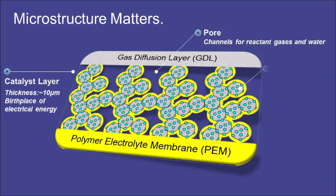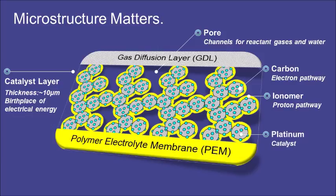In order to make fuel cells cheaper, more efficient, and long-lasting, the microstructure of the catalyst layer is important. Through research, we will understand how the gases, electrons, protons, and water are transported in fuel cells.